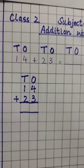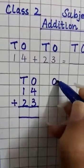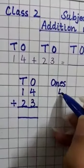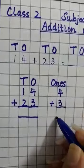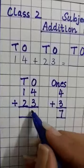First step is to separate the ones. Leave one block and separate the ones. This is one's house: 4 plus 3. Four plus three is seven. Write this seven under one's house.